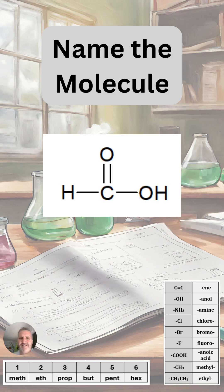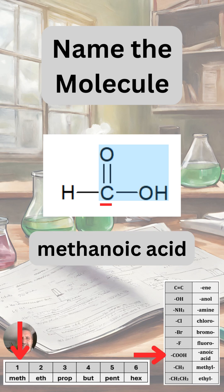The first thing we notice here is that we have this distinctive functional group that has a carbon joined with a double bond to an oxygen, and an OH group or hydroxy group coming off the side. We group this whole group together and it's called a carboxylic acid group. There's only one carbon in the chain, so this molecule is called methanoic acid. All carboxylic acids have that '-anoic acid' ending.